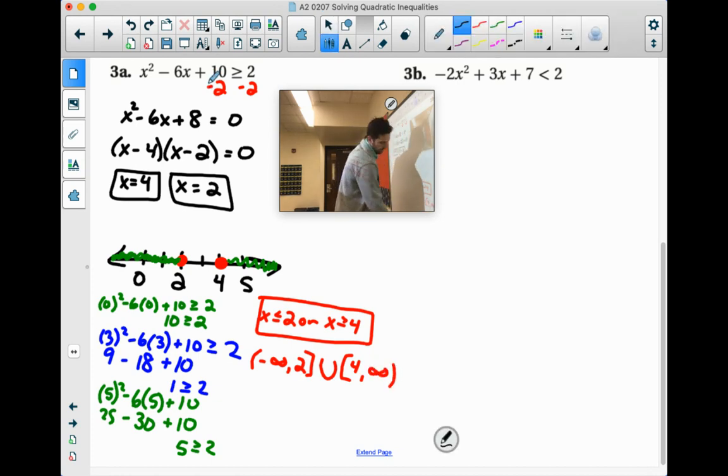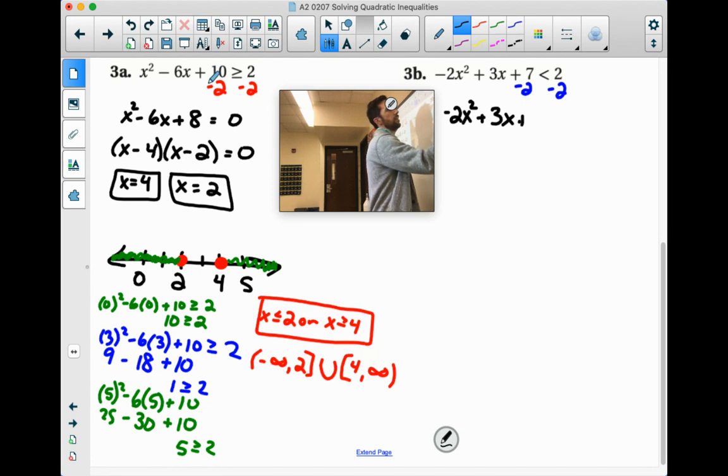All right. Let's try this next one. Let's go with blue. We got to get it equal to 0. Minus 2 minus 2. Negative 2x squared plus 3x plus 5 equals 0. Again, we're ignoring the inequality right now. You always have to factor out negative if the first term is negative.